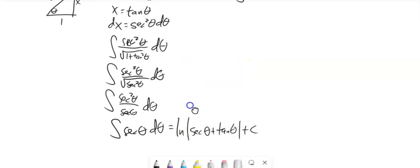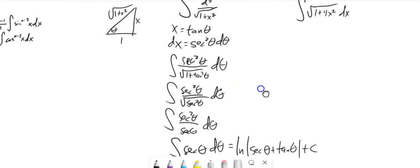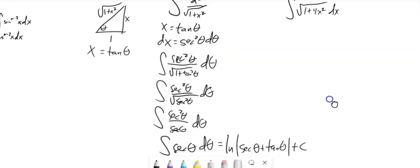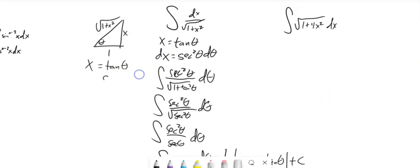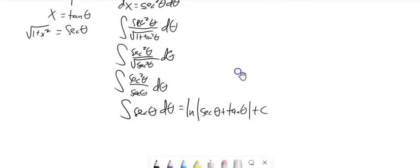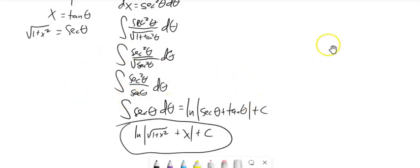It's tempting to stop here, but remember our original integral is in terms of x. So we need to substitute back in. I know tangent θ = x. I also need sec θ: secant is hypotenuse over adjacent, so sec θ = √(1 + x²). This is my back-substitution. The result is natural log of |sec θ + tan θ|, which becomes ln|√(1 + x²) + x|.